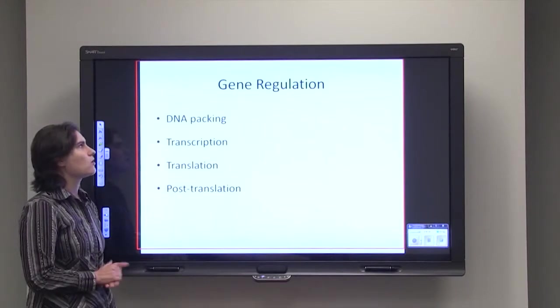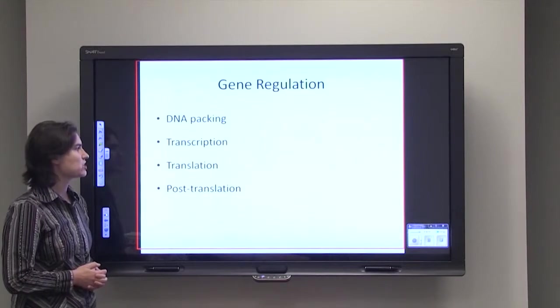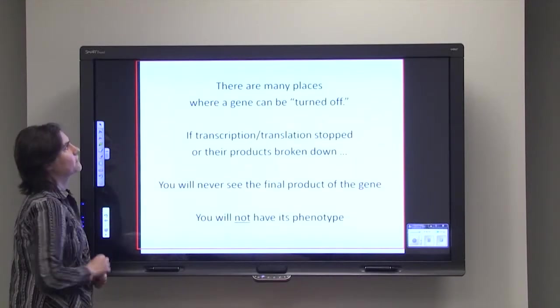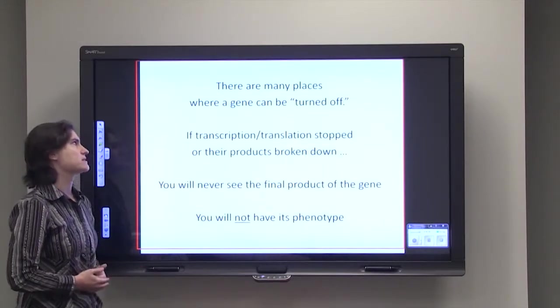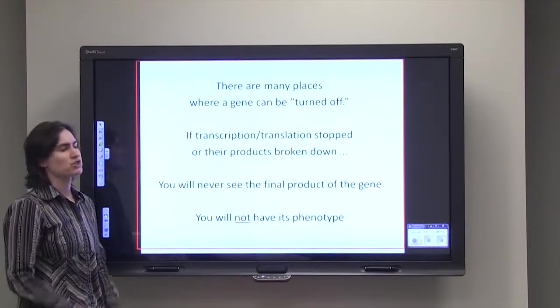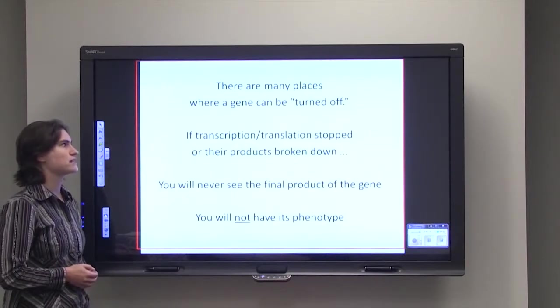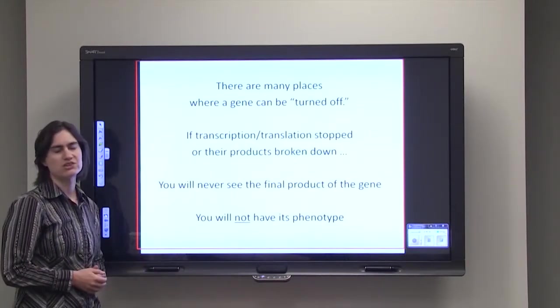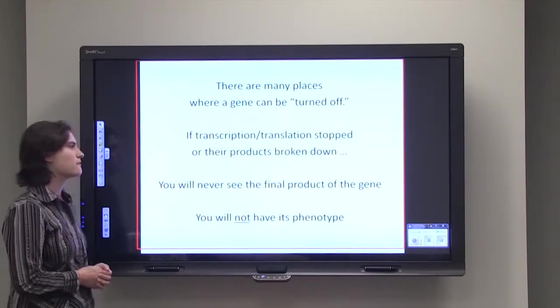Now gene regulation can also involve DNA packing, transcription, translation, and post-translational modifications. So just to kind of drive home the point, there are many places where a gene can be turned off. If transcription or translation are stopped, or if the products of transcription or translation are broken down, you will never see the final product of that gene, and you will not have the particular phenotype of that protein.